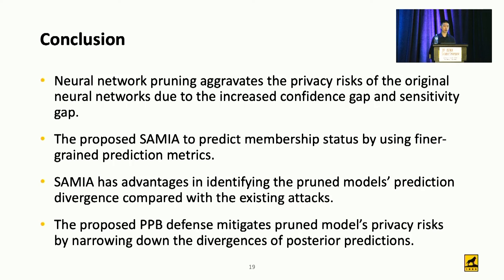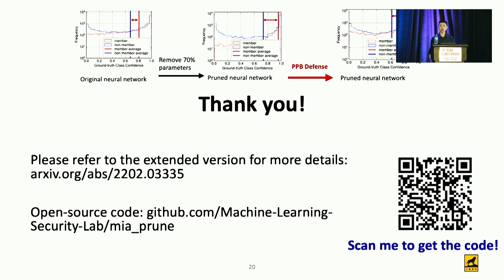To conclude, we identified that neural network pruning aggregates the privacy risk of the original model due to the increased confidence gap and sensitivity gap. We proposed SEMI to predict membership inference attack status using fine-grained prediction metrics, leveraging its advantage in identifying pruned model prediction divergence. We also proposed the PPB defense to mitigate privacy risk by narrowing down the divergences of posterior predictions. The extended version is posted on arXiv, and our code is publicly available via the QR code. Thank you for listening.